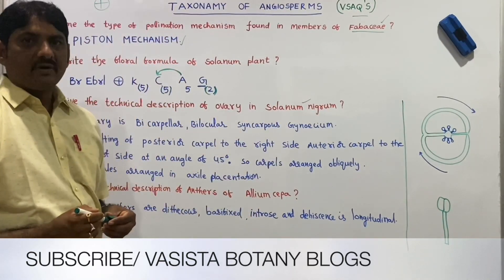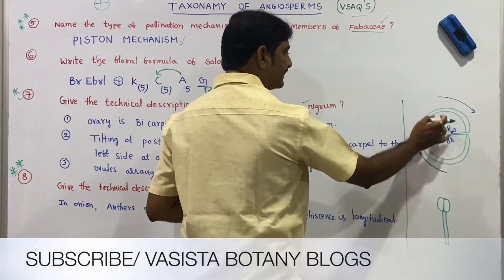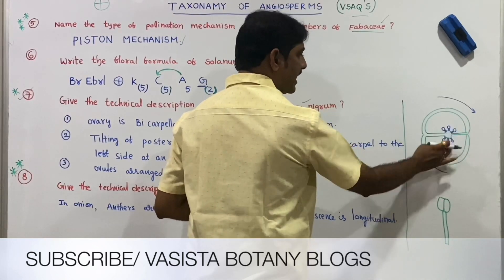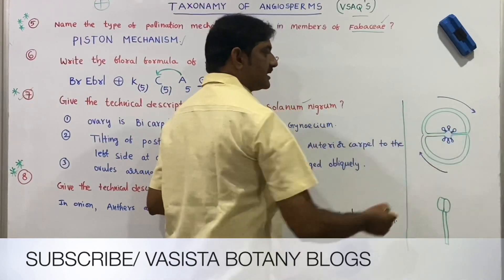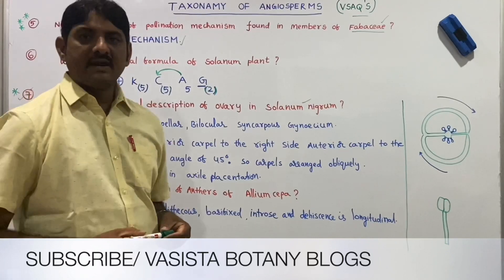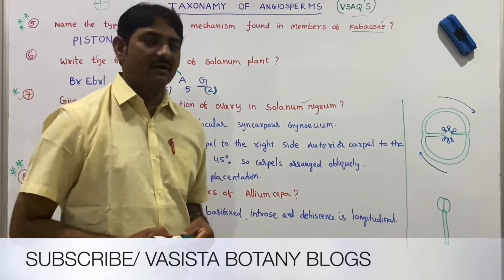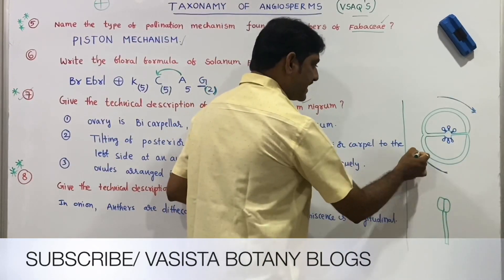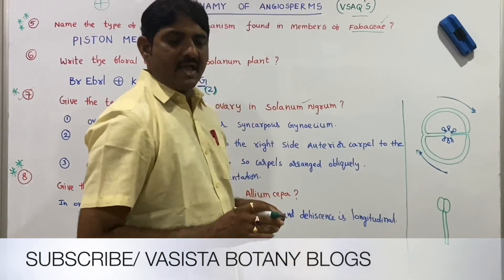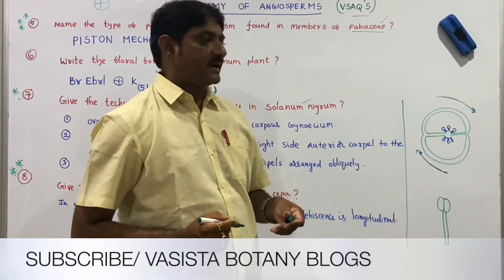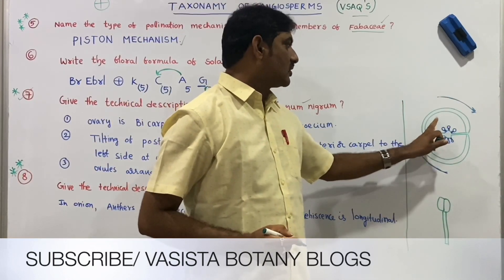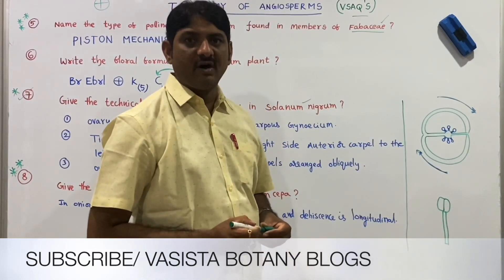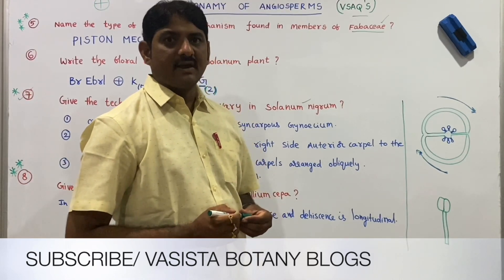Give the technical description of the ovary in Solanum nigrum. The ovary in Solanum nigrum is bicarpellary — two carpels are present. It is bilocular — two chambers are present. The two carpels are fused, so it is a syncarpous gynoecium. The carpels are obliquely arranged: the posterior carpel tilts to the right side and the anterior carpel to the left side at an angle of 45 degrees — oblique arrangement.